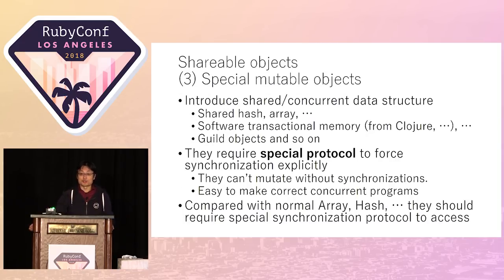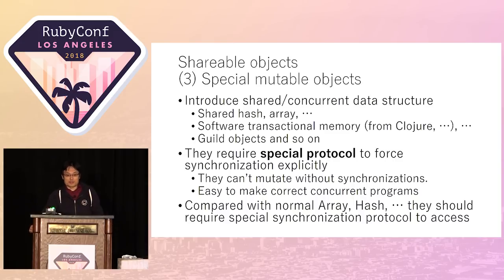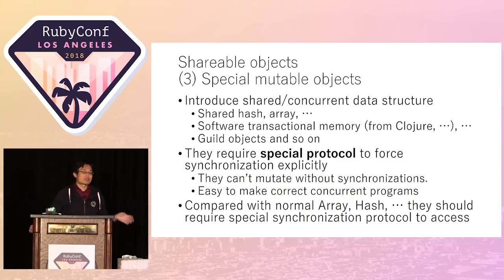The third shareable object type is special mutable objects. Sometimes we need to share data structures such as shared arrays or shared hash objects. To share data structures, we introduce special mutable objects. Special means we need to introduce a special protocol to access the contents of these special mutable objects — for example, correct locking or transactions. I haven't implemented it yet, but it is needed for some kinds of programs.